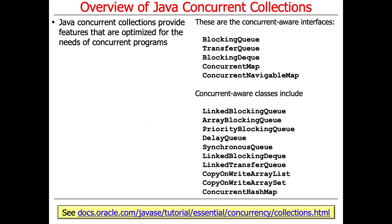Just to remind you, synchronized collections have one lock per collection per object, and as a consequence they tend to be a bit of a contention point. If you have lots of threads trying to simultaneously access the synchronized collection, they all end up colliding over that one lock.